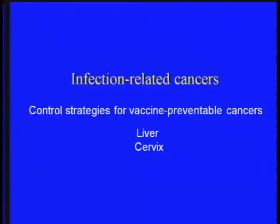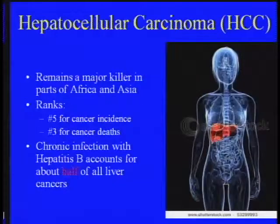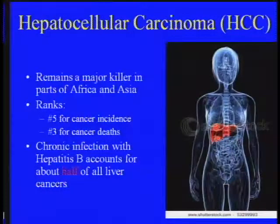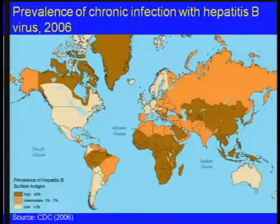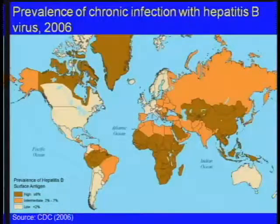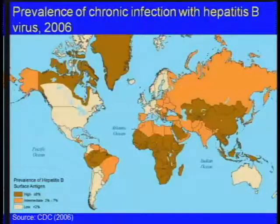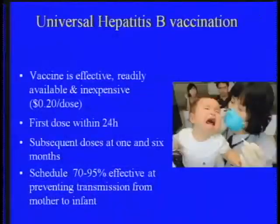Turning to infection-related cancers and liver cancer control: hepatocellular carcinoma remains a major killer in parts of Africa and Asia — number five for incidence, number three for deaths. Chronic infection with hepatitis B accounts for about half of all liver cancers. The high prevalence areas are China and adjoining countries, sub-Saharan Africa, a belt across South America, and other populations.